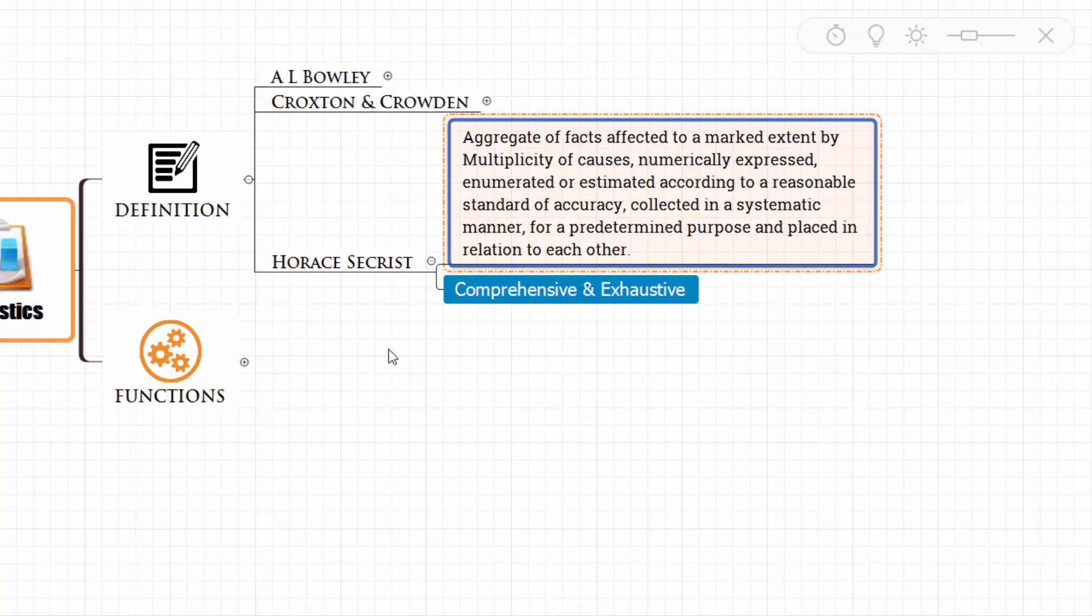It's an aggregate of facts, and it's marked by multiple state of causes. It's actually expressed in numbers. It can be enumerated or estimated according to a standard or reasonable standard of accuracy, and it should be collected in a systematic manner for predetermined purpose. It's placed in relation to each other. So you would agree this is a very comprehensive and exhaustive definition of statistics.